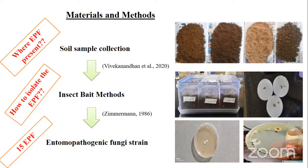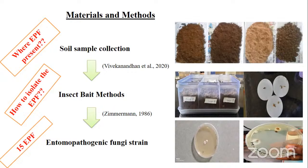How to isolate entomopathogenic fungi? There are three methods available. The first is selective media, used for isolation of specific entomopathogenic fungi. The second method is isolation from naturally diseased death insect cadavers — we isolate the entomopathogenic fungi from naturally diseased insects.